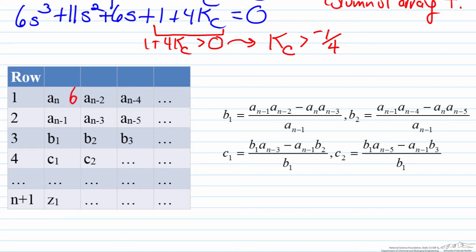a_(n-1) corresponds to the second power, or 11. a_(n-2) corresponds to the first power, or 6. And a_(n-3) corresponds to the constant, which is 1+4KC.